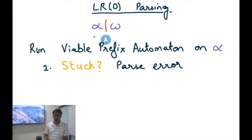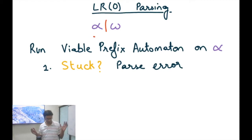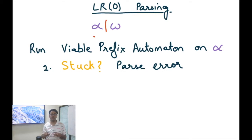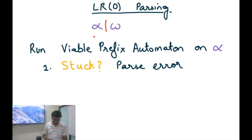To figure out whether we are on the right path, we run the viable prefix automaton — the DFA or NFA — on alpha as input. If the automaton returns an error, meaning it got stuck because there was no possible transition before consuming all of alpha, that means we have reached a state that is not a viable prefix. Since it's not a viable prefix, we have no hope of reducing back to the original structure — so it's a parse error.